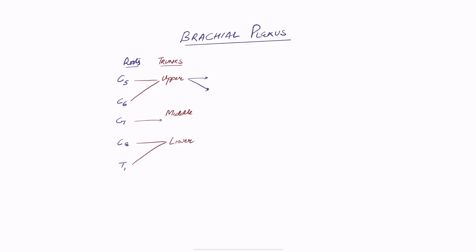The next thing is divisions. Each of the trunks gives off two divisions — an anterior division and a posterior division — from each of the upper, middle, and lower trunks. The brachial plexus is situated around the surface of the clavicle and the axilla, so any injuries in these areas can injure the brachial plexus and any of these structures. Divisions are very important because they further divide to form the cords and branches.